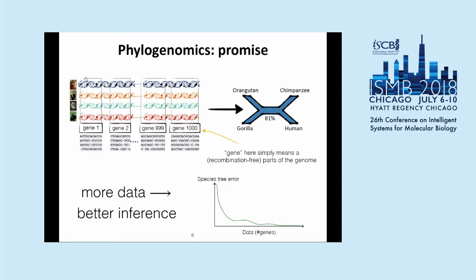So what's phylogenomics? At some basic level, instead of now having one gene, you have the genomes of your various species. You use whole genome alignment to align them together and find blocks, genes, or whatever regions you want. You find perhaps a thousand different genes and use all of them to reconstruct your phylogeny instead of one gene. The premise is that because genomes are big and you have a lot of data, as you increase the amount of data, the error in reconstruction goes down and confidence goes up. More data, better inference.